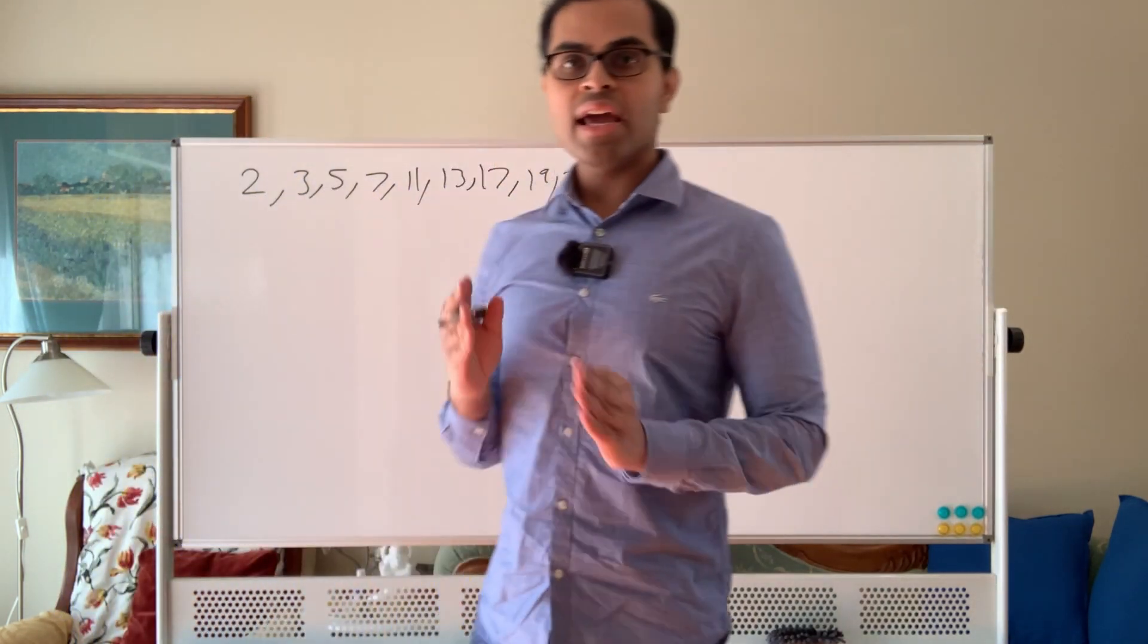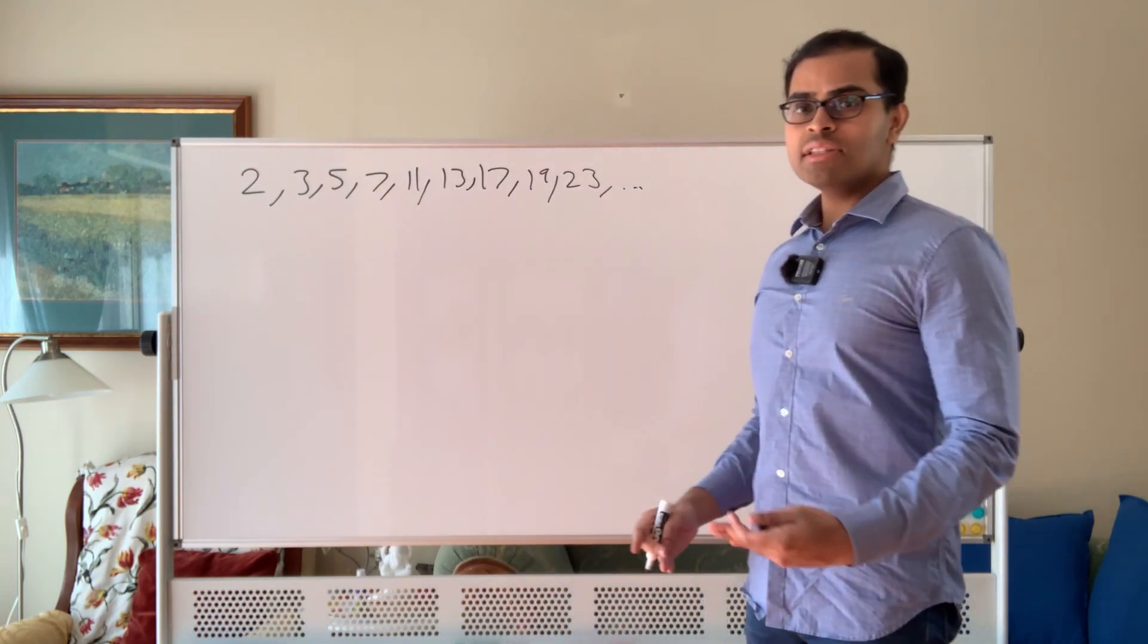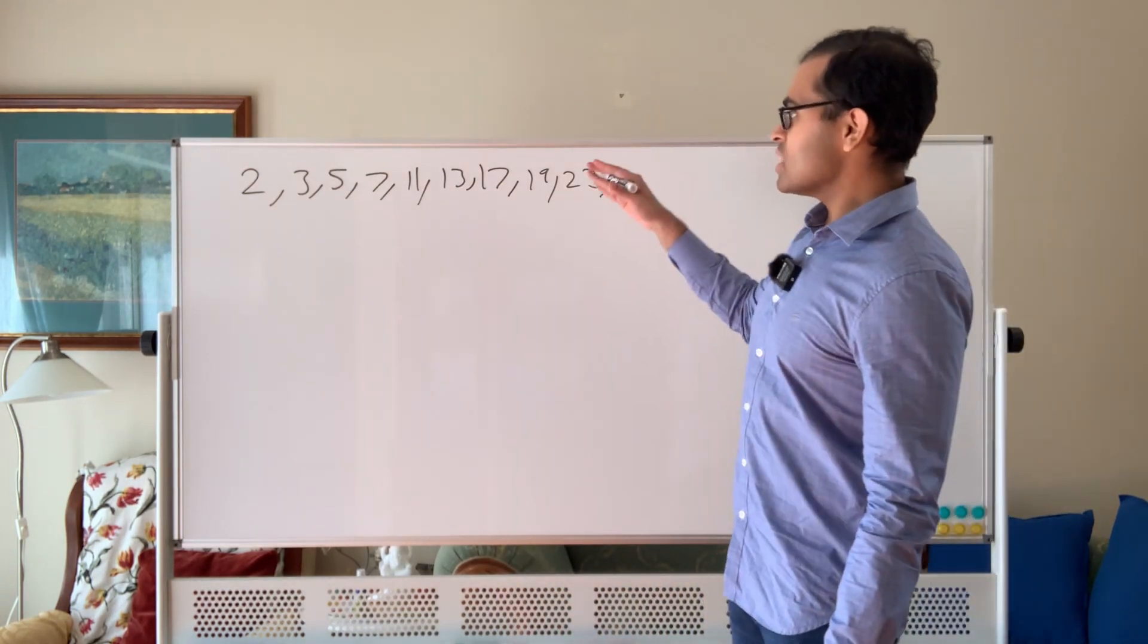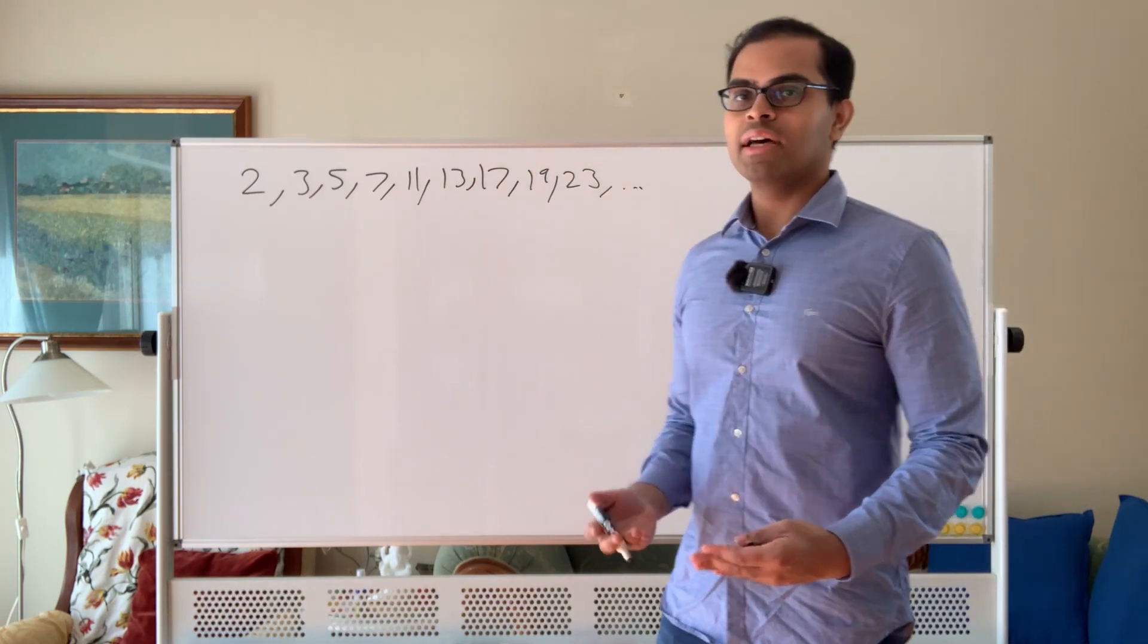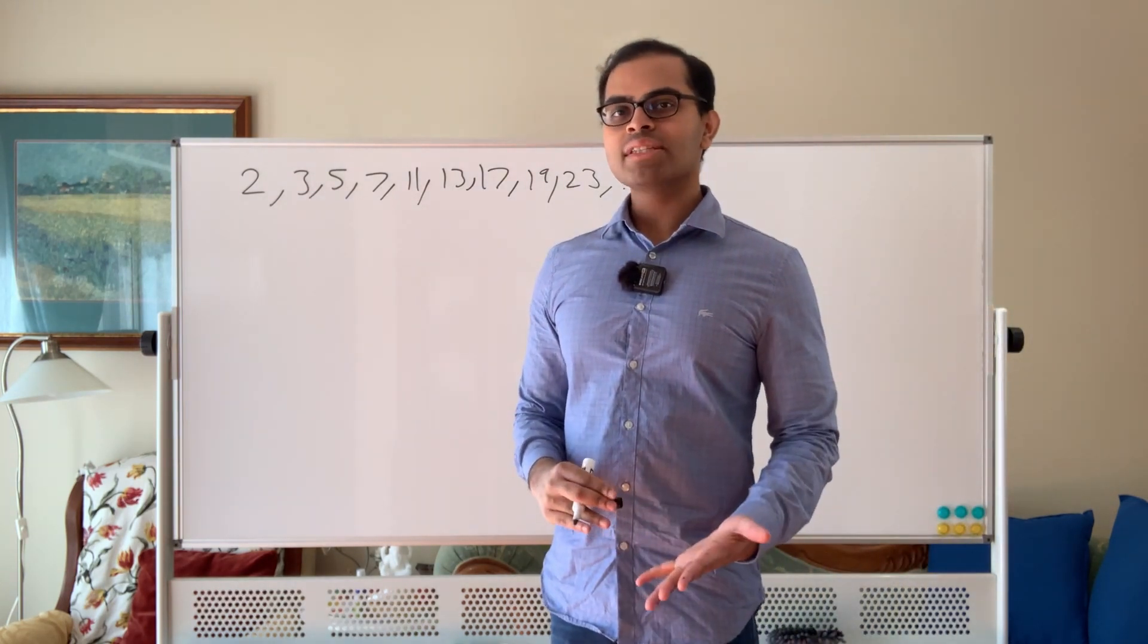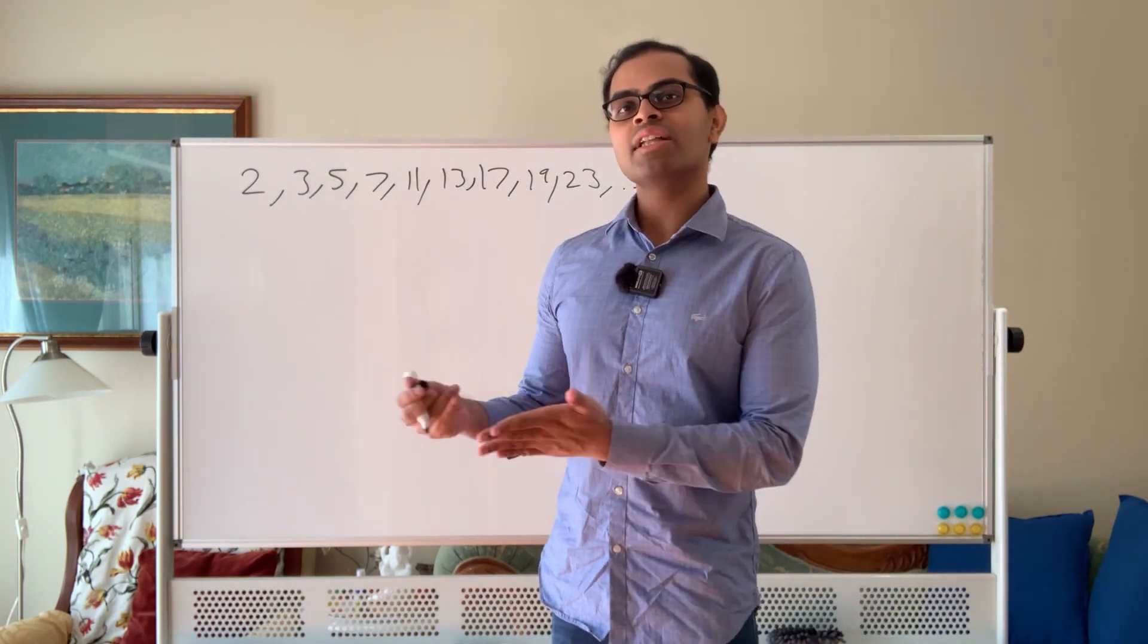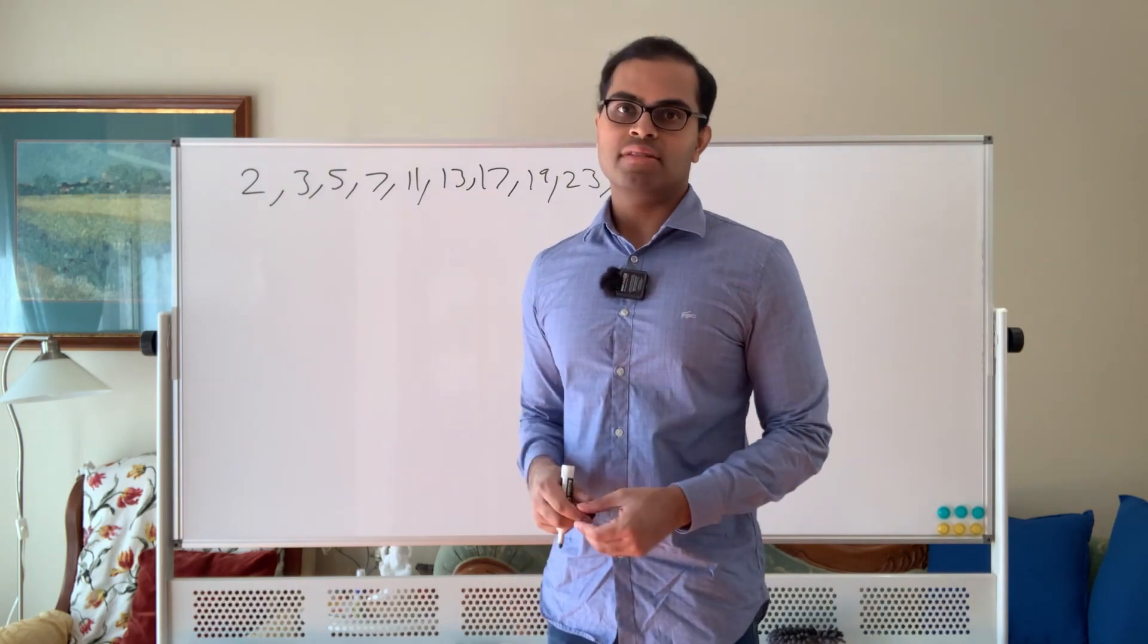Now as you can sort of imagine, as your number gets larger and larger, the probability that it's prime gets smaller and smaller because basically what's happening is there are more chances for the number to be divisible by something the bigger it is.